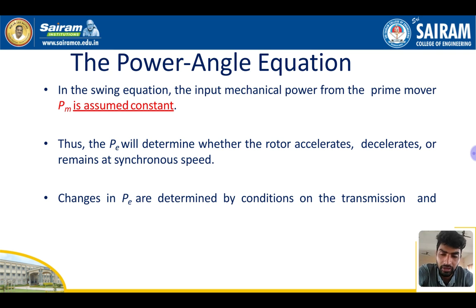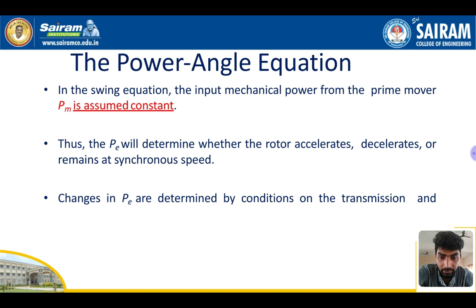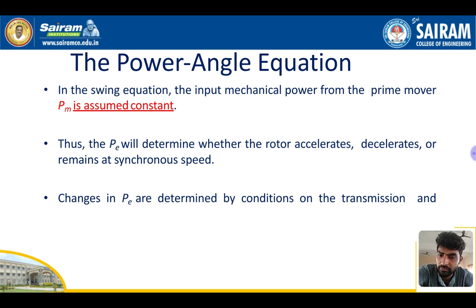We can also consider a synchronous motor: supply is given to the motor and mechanical output is obtained from the shaft or rotor side. In a generator, mechanical input comes from prime movers such as turbines. The mechanical power is constant — whether water is falling into the turbines, or in a thermal power plant where steam flows through the turbine at constant pressure — the rotation remains constant.